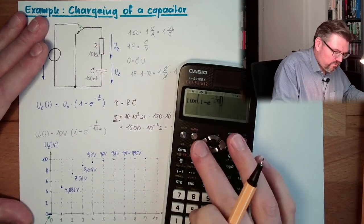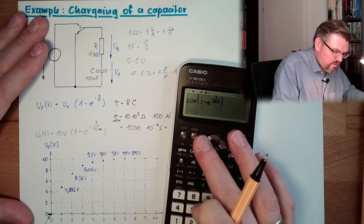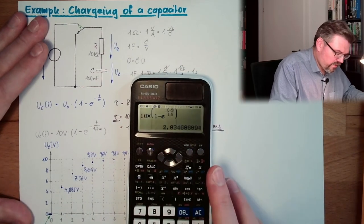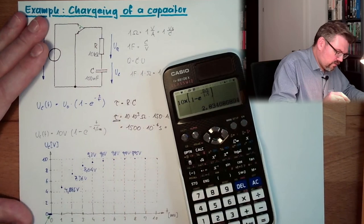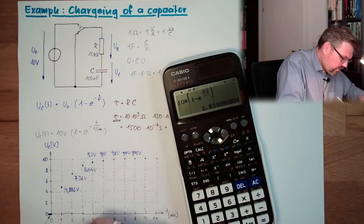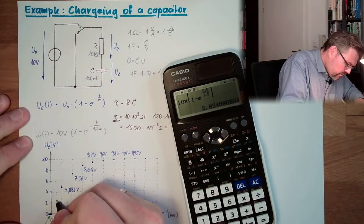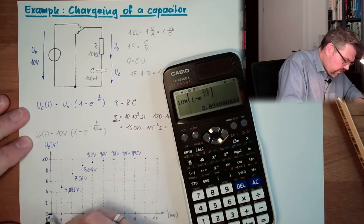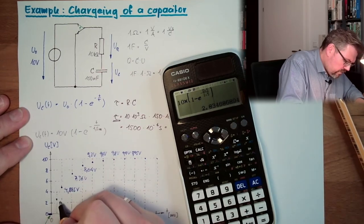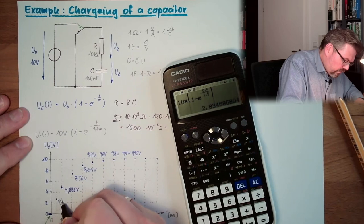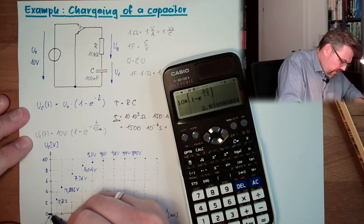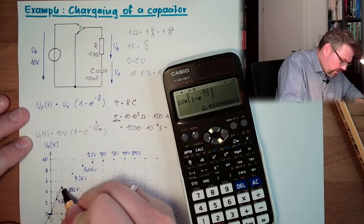Actually, what was missing: at t = 0.5 milliseconds, we get 2.83 volts. If we now combine all these points, the charging curve looks like the expected exponential shape.